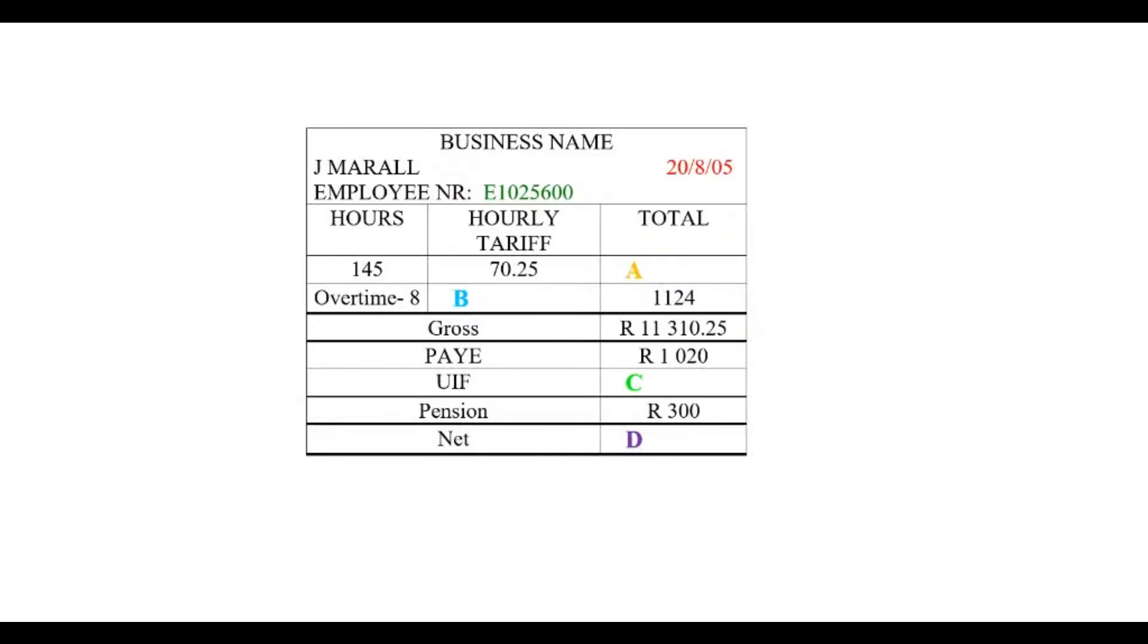Let's look at this example of a payslip. First you would see the business name. And then we have Jamerrill. Now this guy is the employee, that's his name. And next you would see the employee number. This is a unique number to identify him in his company, and it's also for tax purposes. So each employee has a unique number.